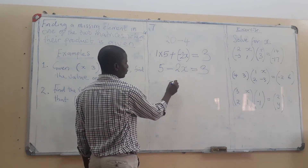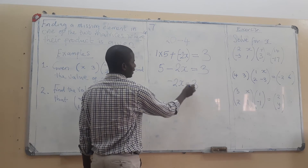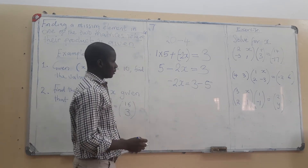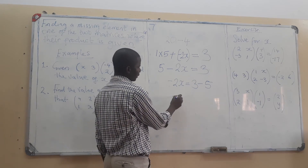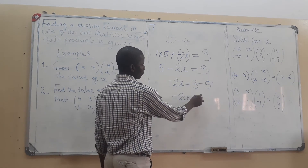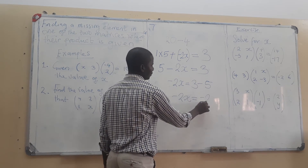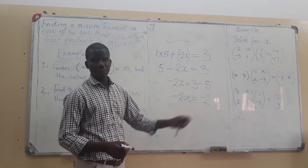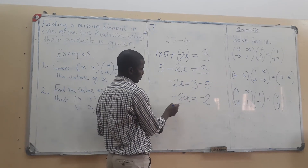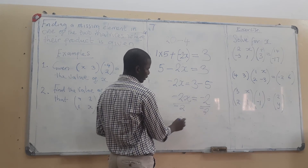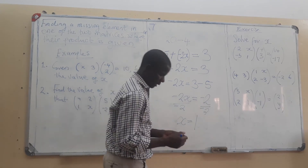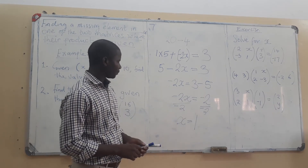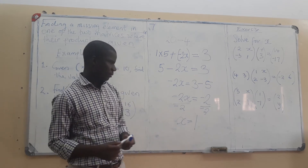We solve this as a linear equation, putting like terms together. We add negative 5 to both sides, giving us negative 2x equals 3 minus 5, which is negative 2. To get the actual value of x, we divide both sides by the coefficient of x, which is negative 2. So x equals negative 2 divided by negative 2, which gives x equals 1.